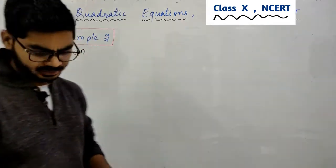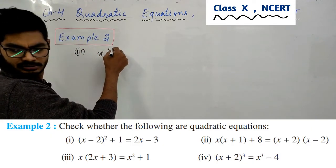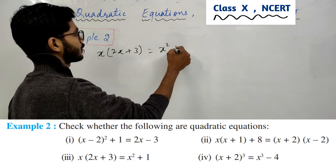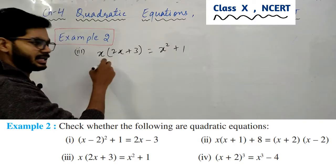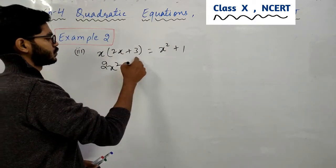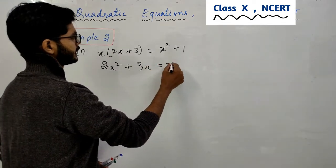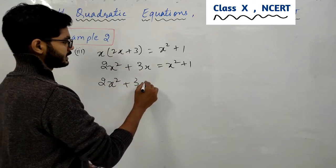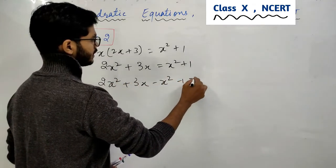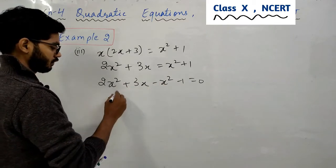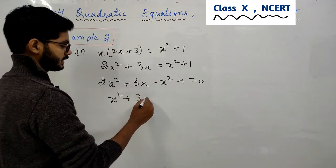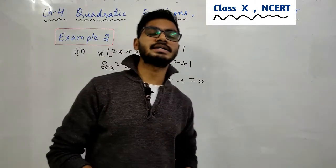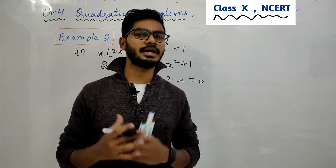I will do third part. I will do 2x² - 3x = x² + 1. 2x² + 3x - x² - 1 = 0. Solve करेंगे x² + 3x - 1 = 0.